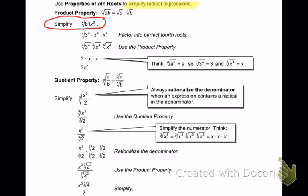We're looking at this problem: we have the fourth root of 81x to the eighth. So really it's like saying the fourth root of 81 and the fourth root of x to the eighth — I'm just going to break it up. Well, the fourth root of 81 — what times itself four times is 81? It is 3. 3 times 3 times 3 times 3 is 81.